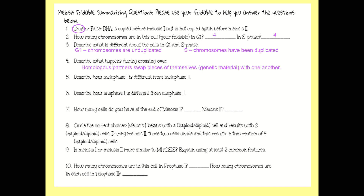The next question asks you to compare how metaphase 1 is different from metaphase 2. One big difference is that in metaphase 1 the homologous partners are lined up together at the equator, but in metaphase 2 you only have a single file line — there are no homologous pairs, just individual duplicated chromosomes.